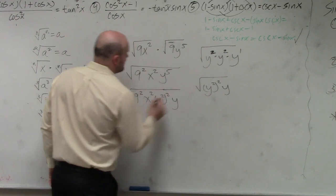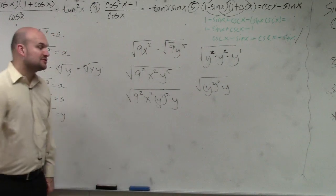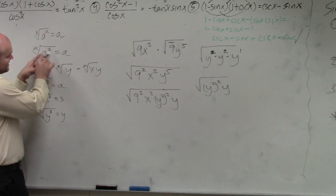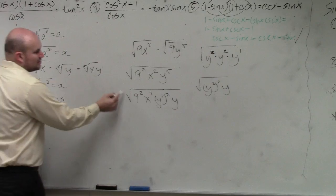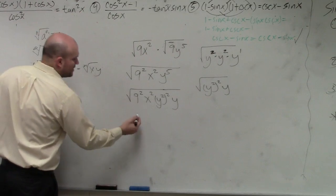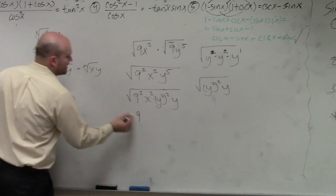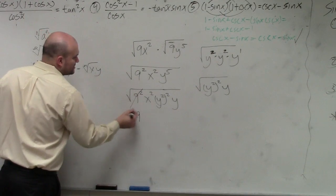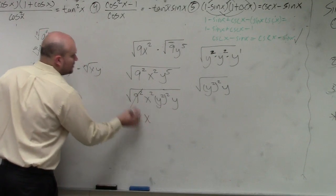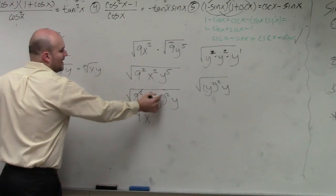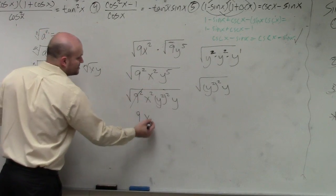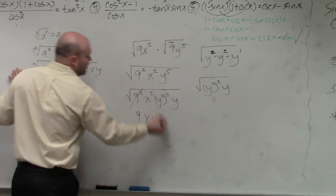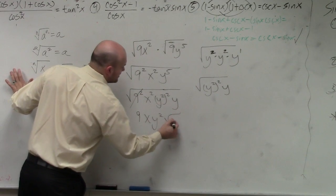So now let's just go through our identity element. The square root of a squared is a. Square root of 9 squared is 9. Square root of x squared is x. Square root of y squared raised to the second power is y squared. Square root of y is still going to be y.